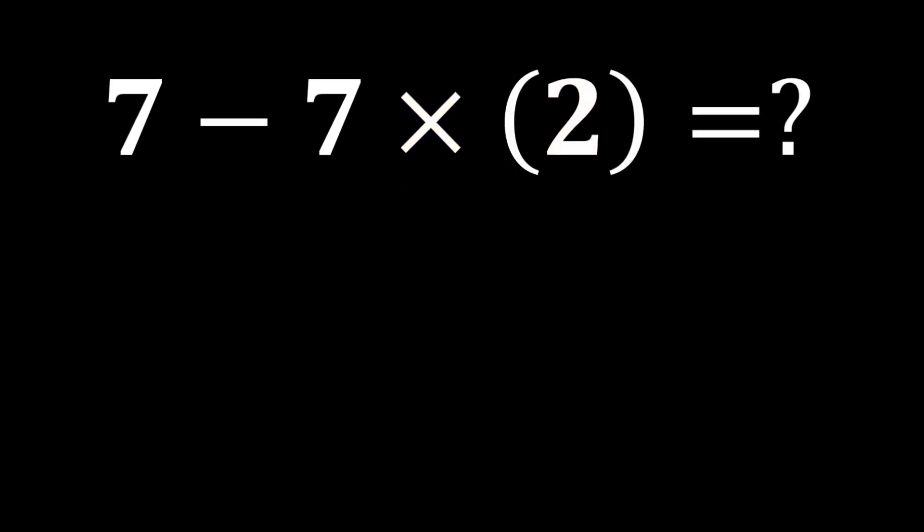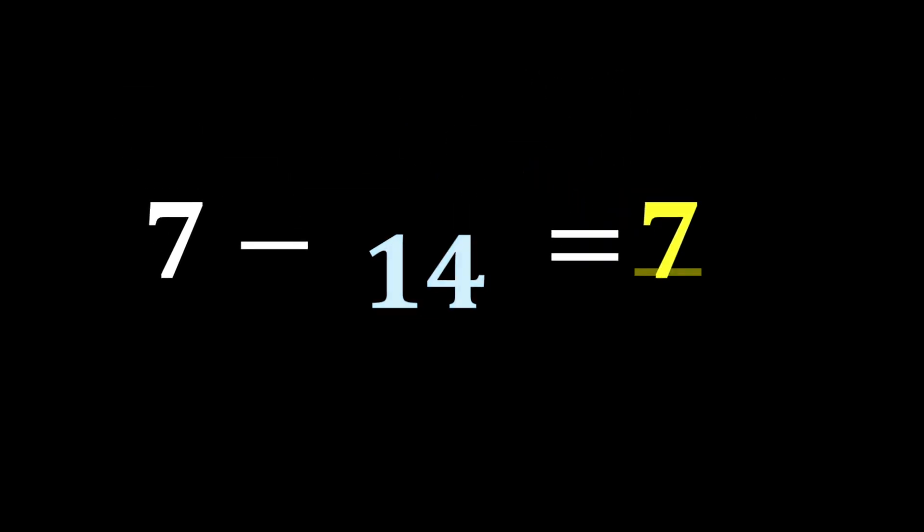The expression becomes 7 minus 7 times 2. In this expression, there is both multiplication and subtraction, and since multiplication has higher priority than subtraction, we must perform the multiplication first. 7 times 2 becomes 14. And finally, 7 minus 14 becomes negative 7.